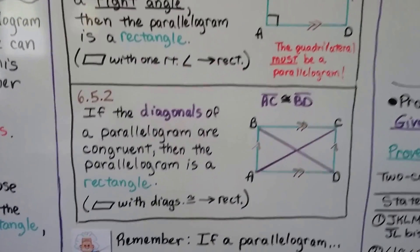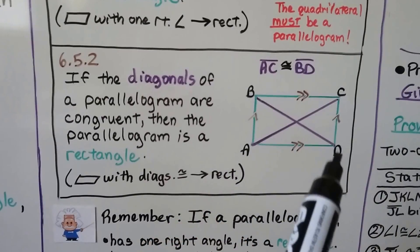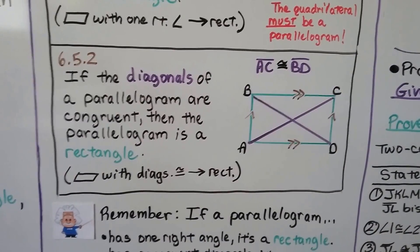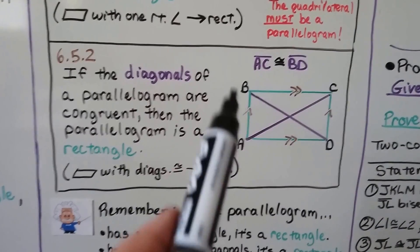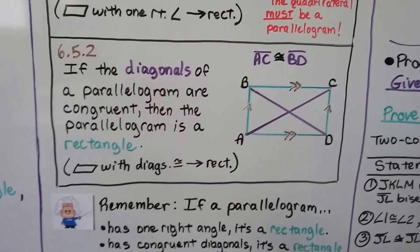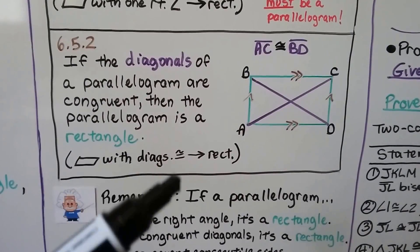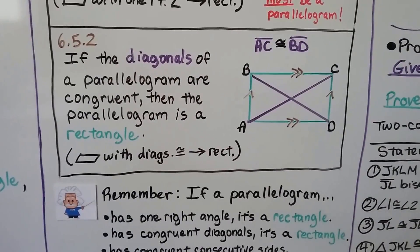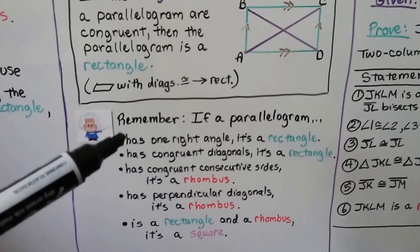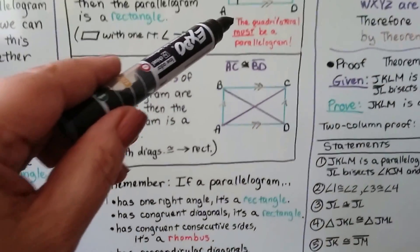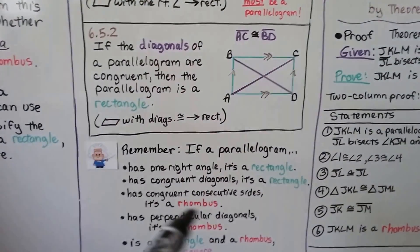The next theorem says if the diagonals of a parallelogram are congruent — so this diagonal is congruent to that diagonal — then the parallelogram is a rectangle. So AC is congruent to BD. We can write it in geometric notation as: a parallelogram with congruent diagonals, therefore rectangle. So if a parallelogram has one right angle, it's a rectangle; if it has congruent diagonals, it's a rectangle.